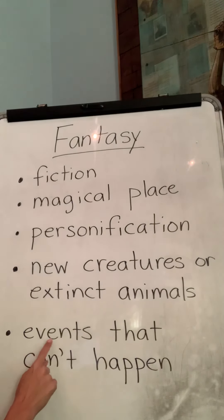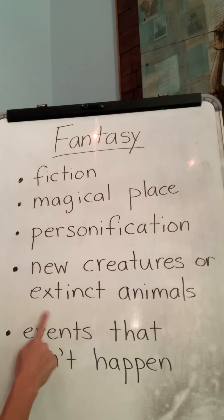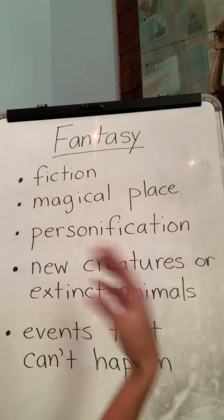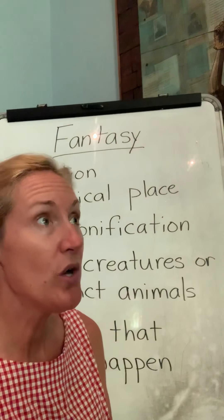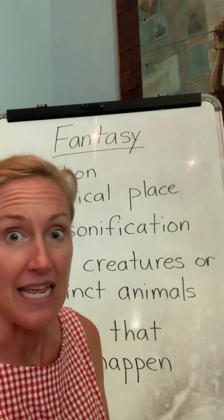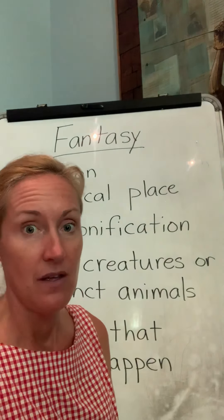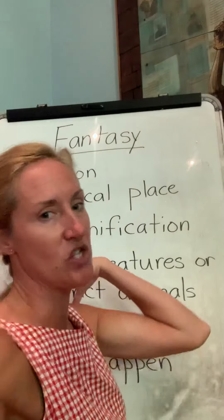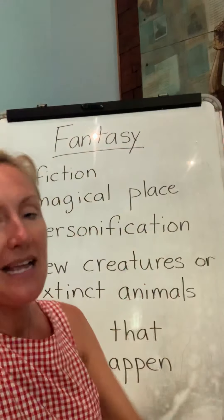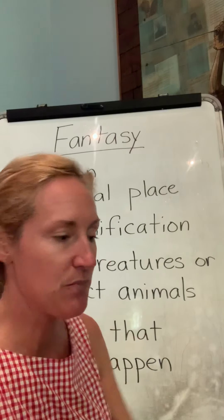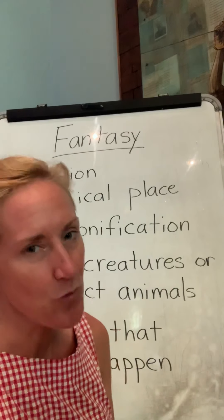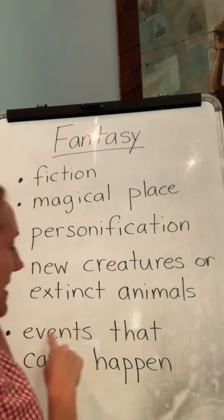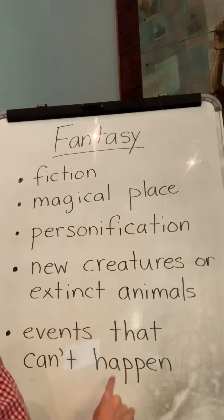And then last, it says events that can't happen. So that means something happens that can't really happen. We couldn't really have ourselves grow wings out of our back and fly up into the sky and sprinkle confetti on everybody — that couldn't really happen. So those are events, things that can't happen.